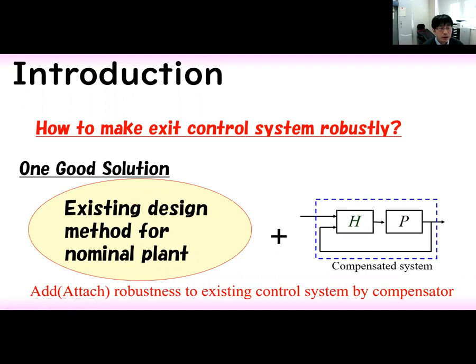I introduce how to make existing control systems robust by MEC and disturbance observer. One good solution is to add an existing design method for nominal plant with a compensated system, adding robustness to the existing control system by using a compensator.